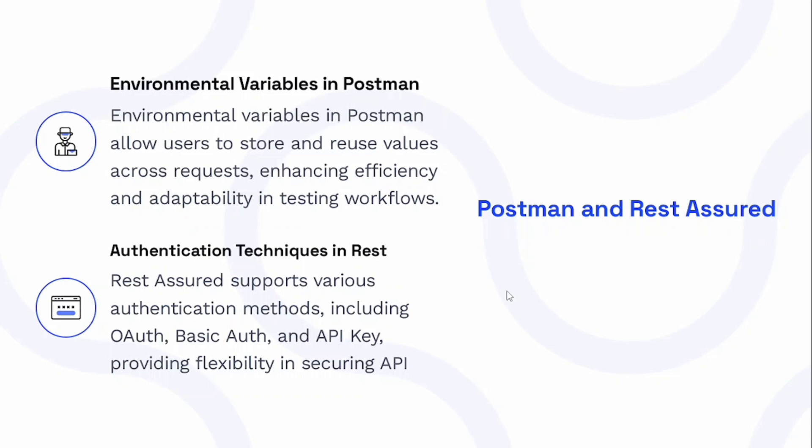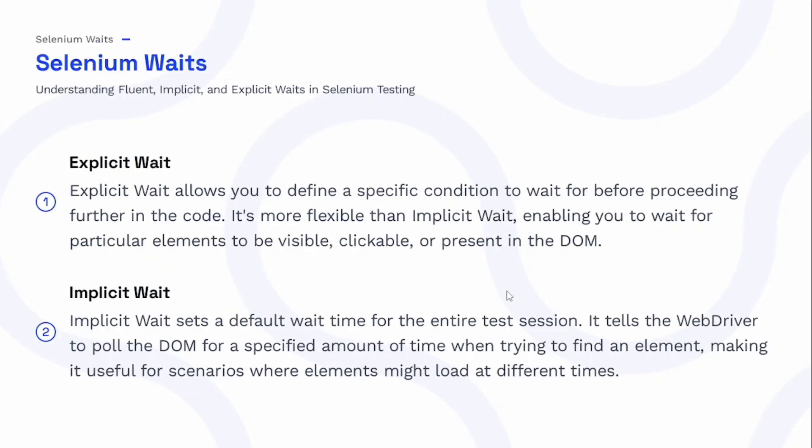The next set of questions is about Selenium waits — fluent wait, implicit wait, and explicit wait. Explicit wait allows you to define a specific condition to wait for before proceeding further in the code. It is more flexible than implicit wait, enabling you to wait for a particular element to be visible, clickable, or present in the DOM.